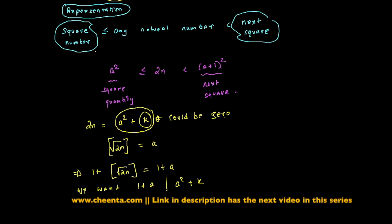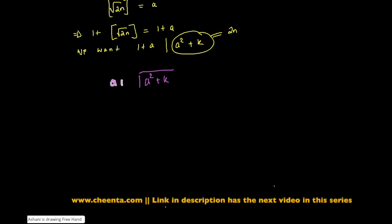We want 1 plus a to divide a square plus k. So let's do a simple long division. By the way, this was our assumption that that's the value of 2n. So if I do a long division, a square plus k, if I let it divide by a plus 1, then if I put a here, then we have a square plus a.